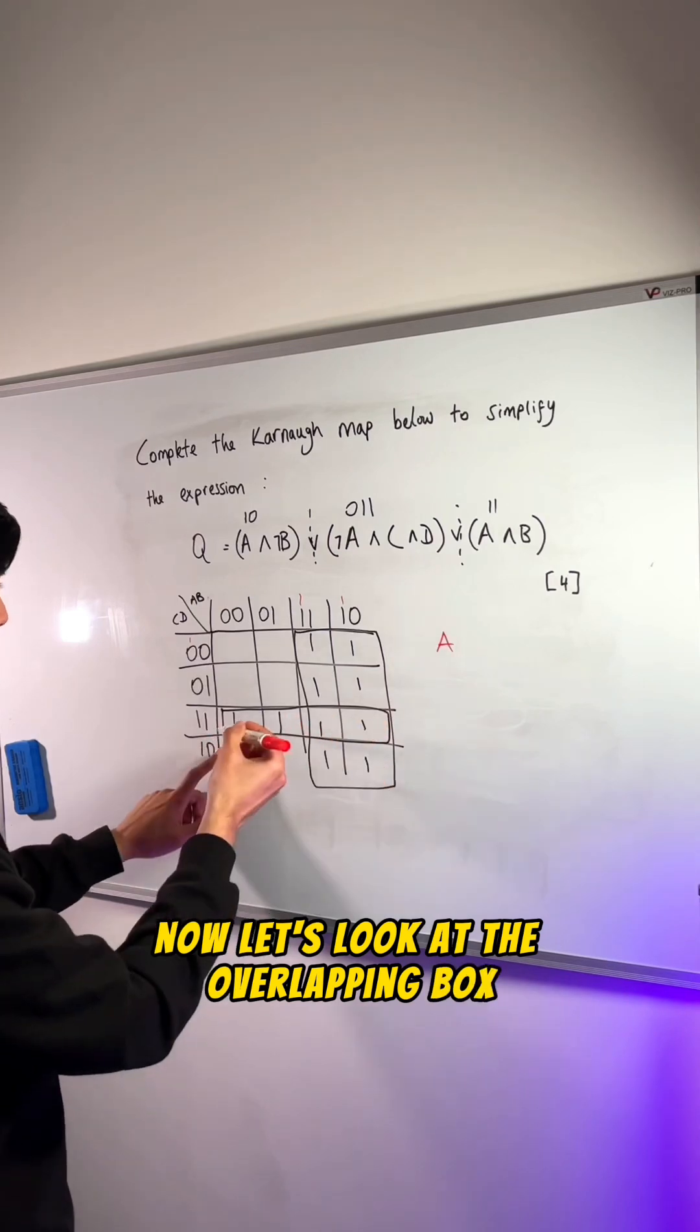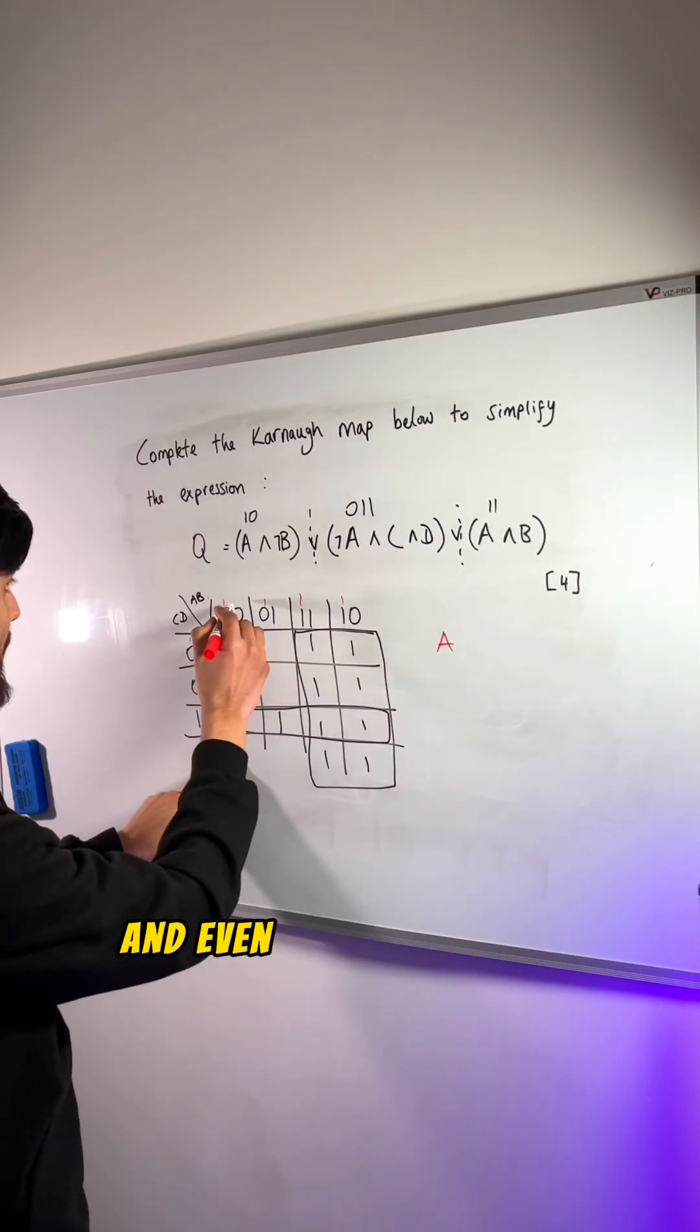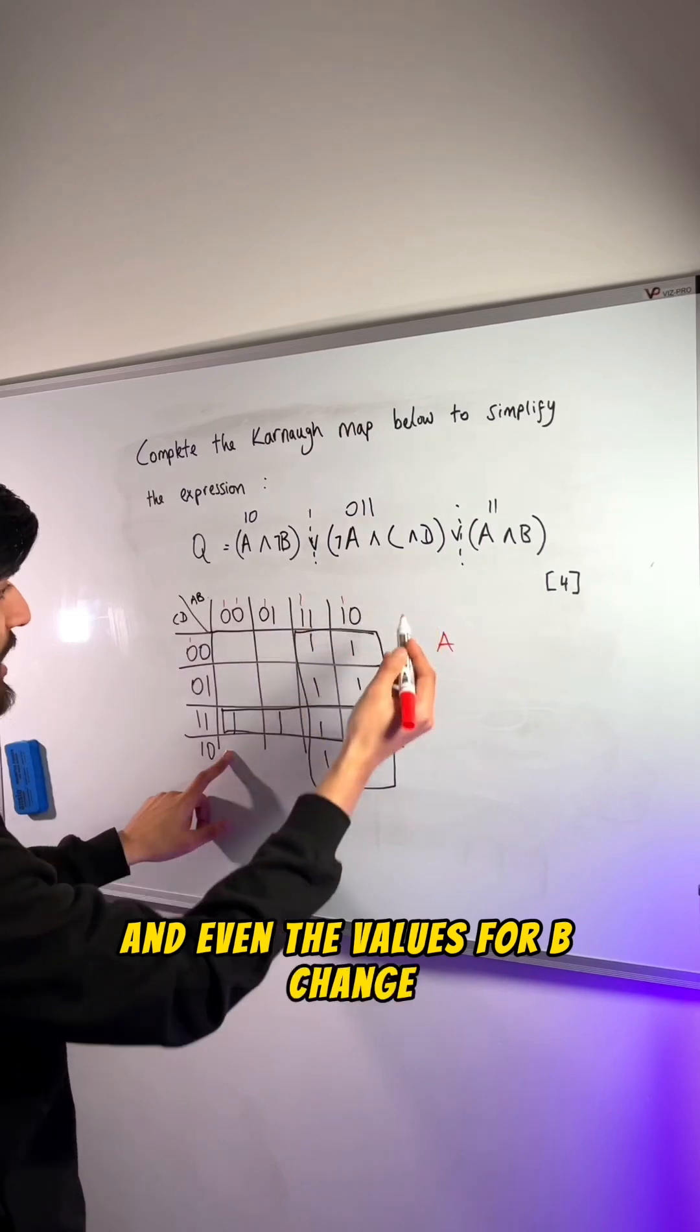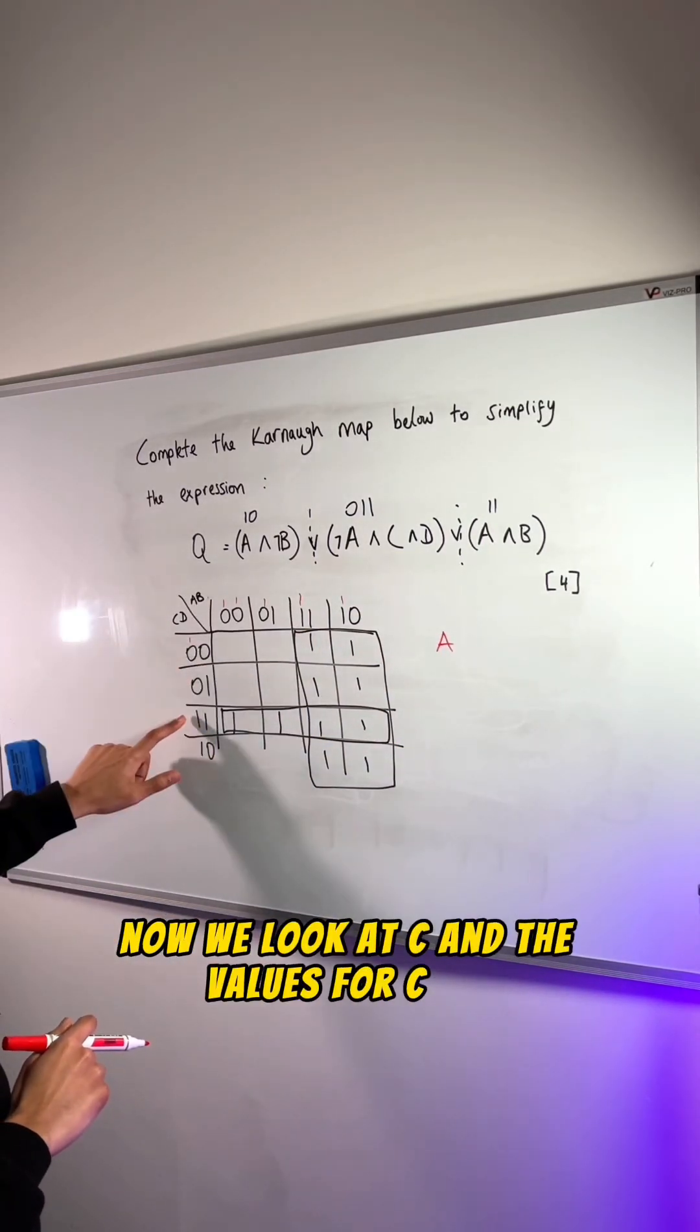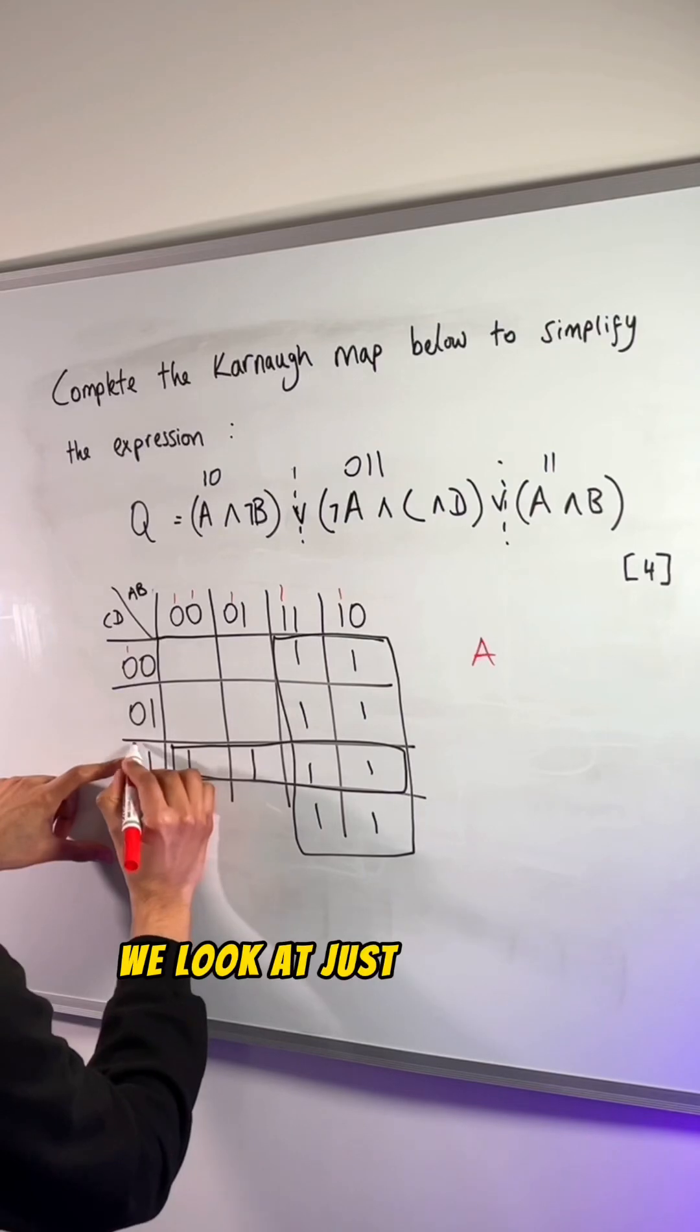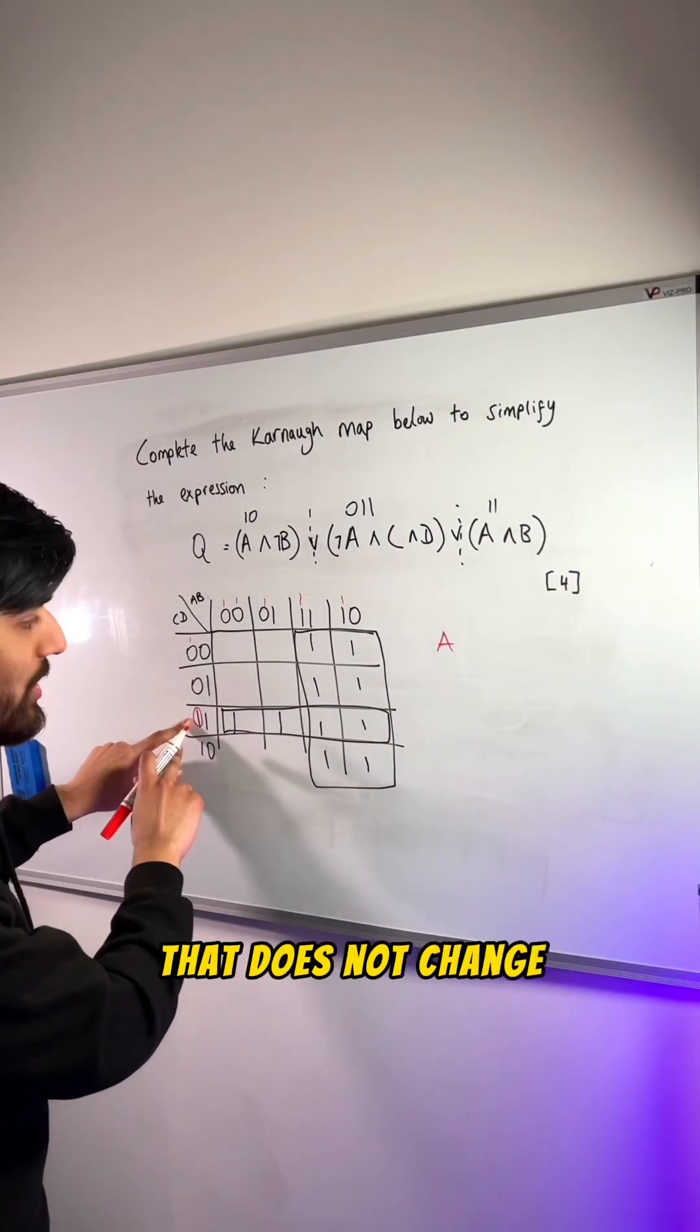Now let's look at the overlapping box. And the value for that is A, which definitely change. And even the values for B change, so we don't write that down. Now we look at C and the values for C is 1. We look at just this value. And obviously, since it's just one thing that we're looking at, that does not change.